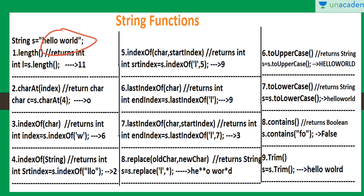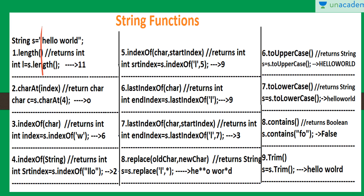If we want to find whether a particular substring is present in our string, we can use the contains() function, which returns a boolean. For example, searching for 'fo' which is not present in 'hello world' will return false. The trim() function is used to remove all trailing and heading spaces from the string. Trailing spaces are at the end and heading spaces are at the start. It does not remove middle spaces, only heading and trailing ones.